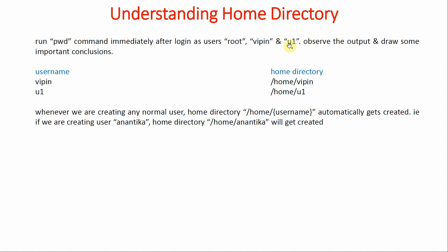Since we do not have the u1 user, first of all, as a root user, we are going to create the u1 user. Later on, we will be going into great detail about how to create users in depth. But for this lecture, we will be using simple commands to create the user u1. Then we will log in as root user, vpn user, and u1 user from different terminals. As all these users, we are going to run the command pwd and we will observe the output and draw some important conclusions.